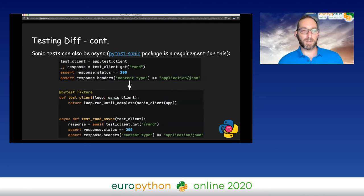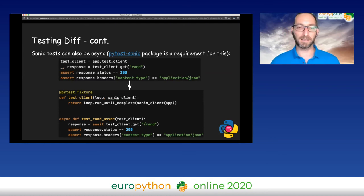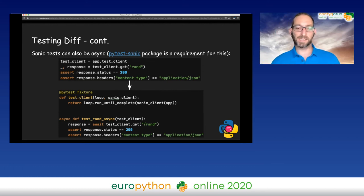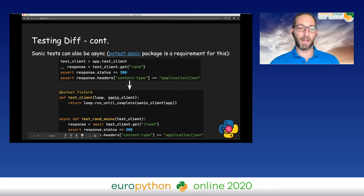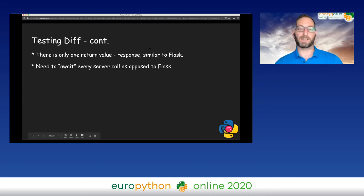There is another option — Sanic tests can also be asynchronous. For this, you need to add an additional package called pytest-sanic. If you do that, you get only the response as a result and not a request and a response, but you need to await whenever you call the server. Other than that, it is the same.